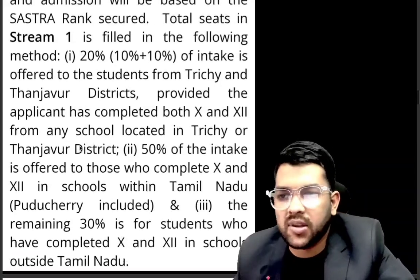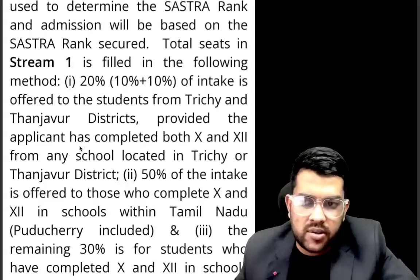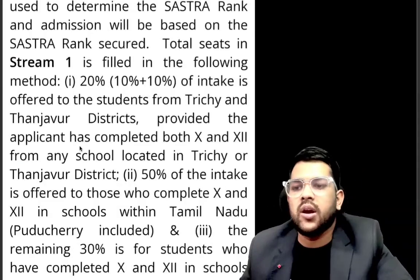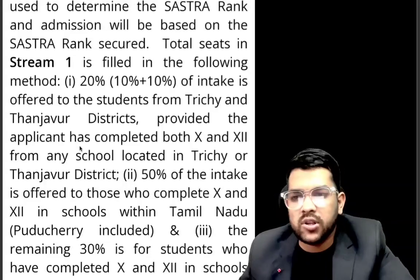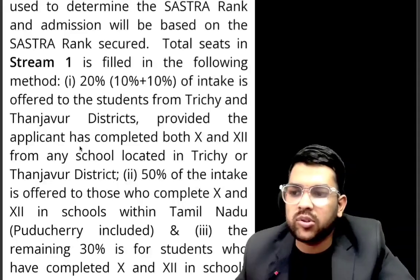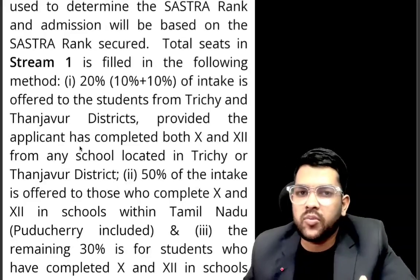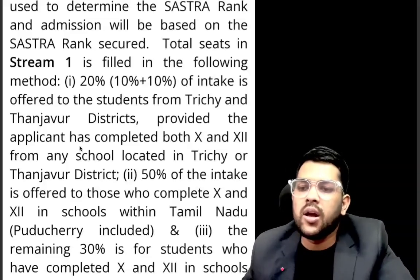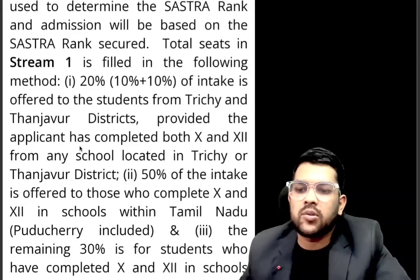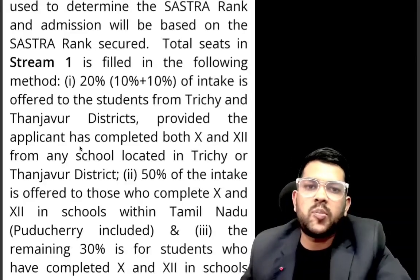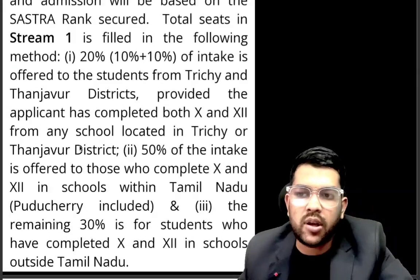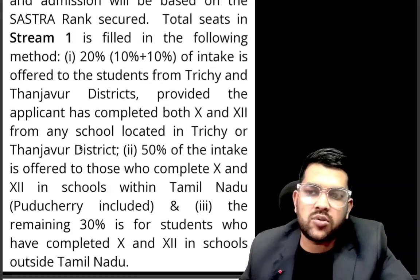For example, if there are 100 seats, 70 seats will be given through Stream 1 via JEE Mains plus board score. Out of those 70 seats, 14 seats go to the two districts — 7 seats for Thanjavur and 7 seats for Tiruvarur district. Then 35 seats go to Tamil Nadu students, and 21 seats go to students from other states. So out of around 3,000 total seats, approximately 600 seats are available for students from other states.